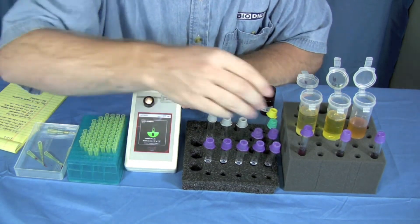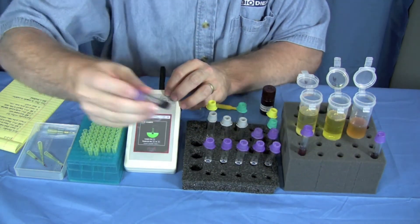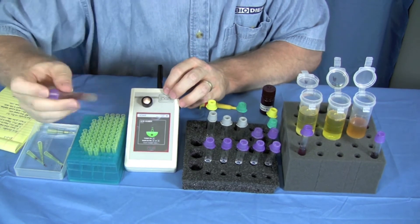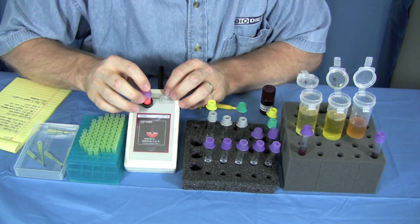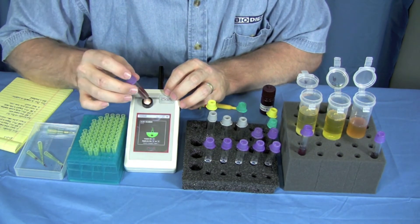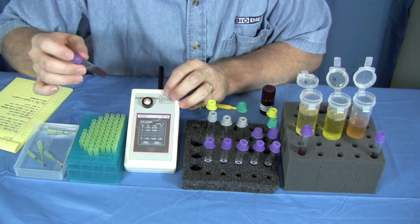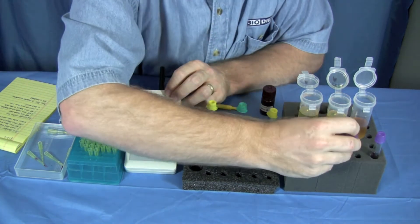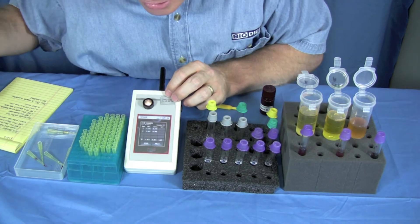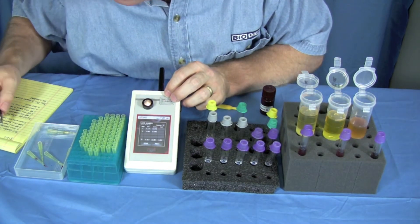To do the next one, we just grab our next test tube and shake it vigorously. Put it in, pull it out, put it in, pull it out. This one's acid number is 0.781.